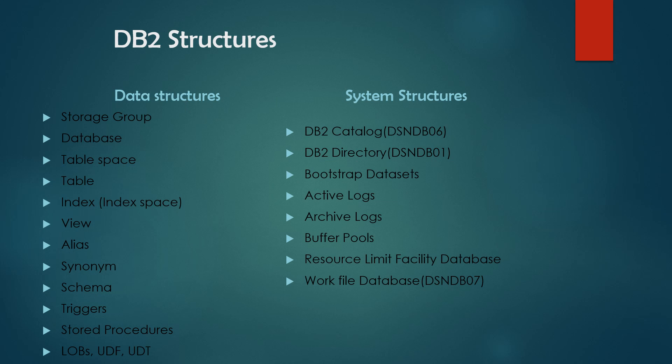Now we'll understand DB2 structure. DB2 is divided into two parts: the data structure and the system structure. In this session we'll discuss the data structure. In data structure we have storage group, database, tablespace, table, index, view, alias, synonyms, schema, and more.